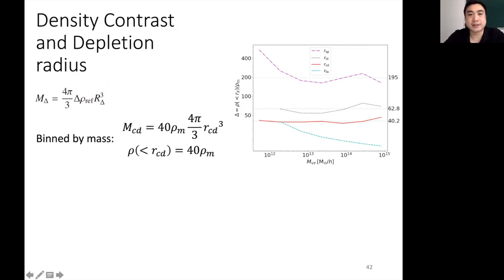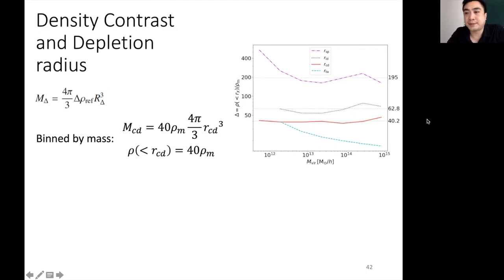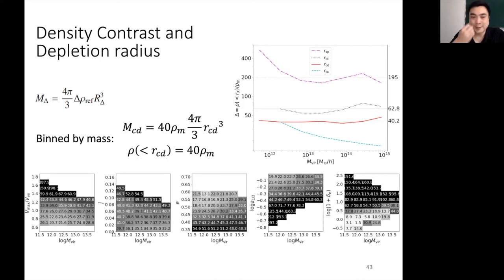Here I show the enclosed density within a given radius scaled by the reference density — in our case the mean matter density of the universe — giving a delta factor representing scaled enclosed density. The characteristic depletion radius, represented by the red line, is roughly constant, which is consistent with spherical collapse models. With this equation, we find that delta equals 40 from the plot. Binning the bias by two parameters tells us how much matter is enclosed within the characteristic depletion radius, with higher concentrations corresponding to higher enclosed densities, and so on.